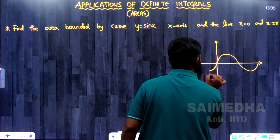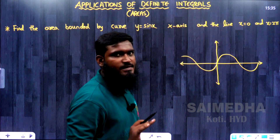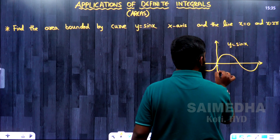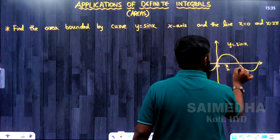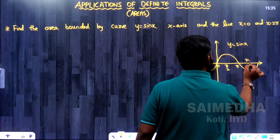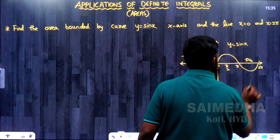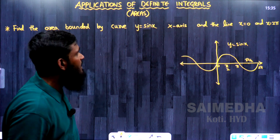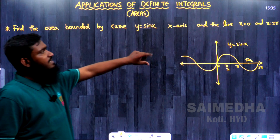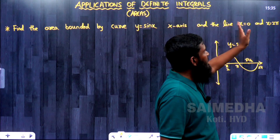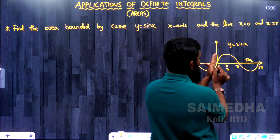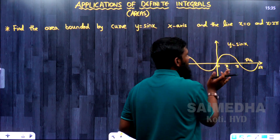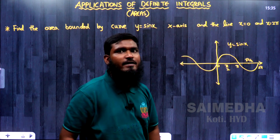This is the graph for sin x. In y = sin x, the key points are: 0, π/2, π, 3π/2, and 2π on the positive side, and -π/2, -π, -3π/2, -2π on the negative side. According to our question, we have the sin x graph with limits 0 to 2π, so we need to find the area from 0 to 2π. Half the region is above the x-axis and the next half is below the x-axis.